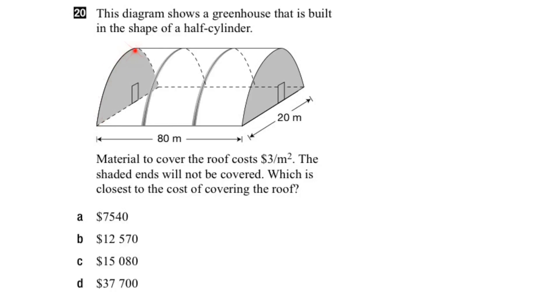In this question, we're given the diagram of a greenhouse that's in the shape of half a cylinder. And we're asked to find how much will it cost to cover this roof here, given that material for the roof costs $3 per meter squared.